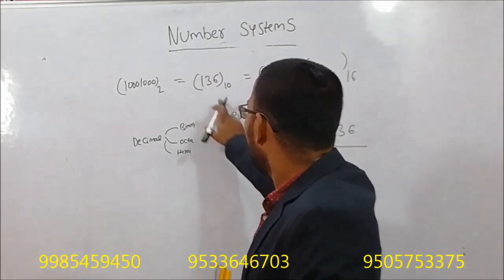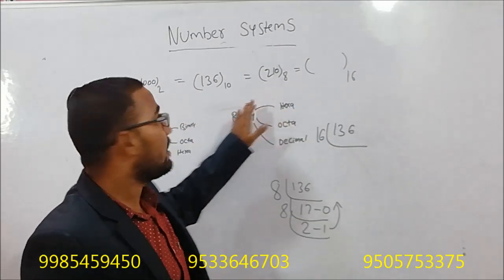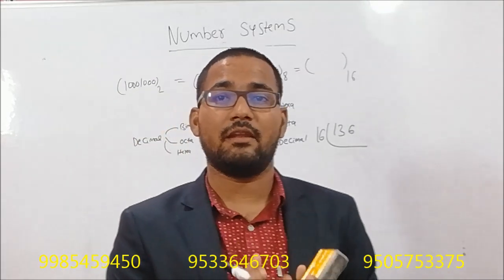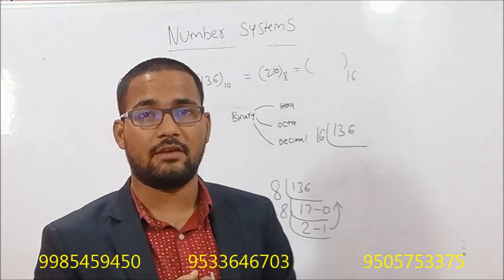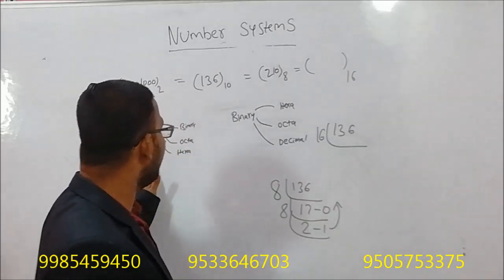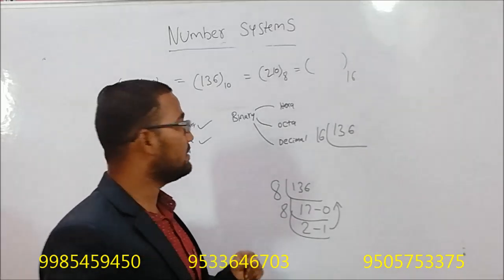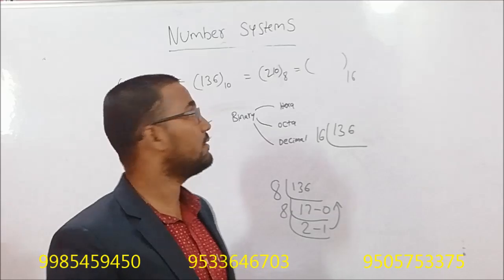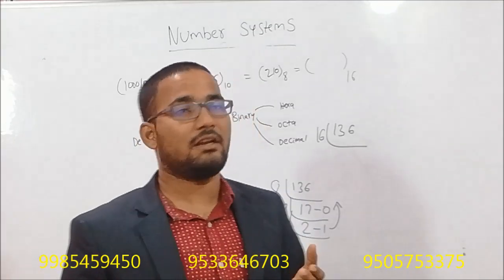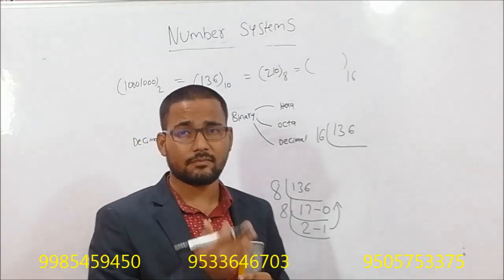If we have a number like 136, we can convert a decimal number to a binary number. We can also convert a decimal number to hexadecimal. So, if we talk about decimal to binary conversion, octal conversion, and hexadecimal conversion, we can convert that number to its base value.